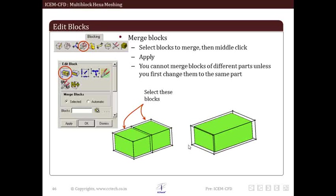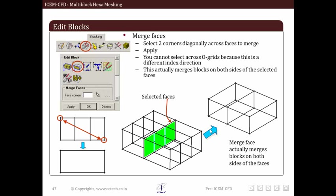Next operation is merge blocks. This option allows us to merge several blocks into a single large block. We can either select desired blocks or all blocks by using automatic option. Do remember that we cannot merge blocks of different parts unless we first change them to same part. The entire operation illustrated here. We select these two blocks and they are merged into a single block. This is a fairly simple operation.